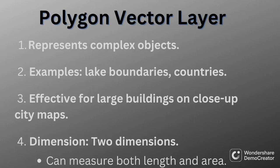Polygons are used to represent more complex objects such as boundaries of a lake, country, house and so on. Just like points, polygons also depend on the scale of your map. If you have a map of your district, houses will be represented by polygons, but if you scale your map to a nation or region, those same buildings will become points instead of polygons. Polygon vectors are said to have two dimensions, meaning their length and area can be measured.